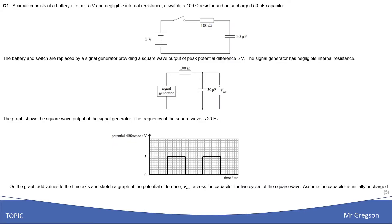Our very first question is quite a decent size one — it's worth five marks. If you've practiced before you'll score well because it's relatively straightforward. They are giving you an intentionally large amount of information. We have a capacitor circuit: a 50 microfarad capacitor, a 100 ohm resistor, and a 5 volt power supply. To change it up, they're introducing a signal generator — basically a 5 volt power supply that turns on and off on a regular pattern, but not changing anything else.